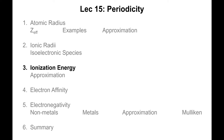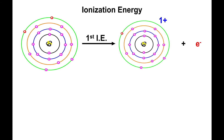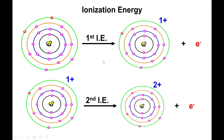Ionization energy. This is related to ionic radii, but it is a different concept altogether. Specifically, ionization energy is the energy required for an atom to give away its electron. There are a number of ionization energies that an atom can go through: the first ionization energy, the second ionization energy, and for some atoms we can go all the way up to the eighth ionization energy.